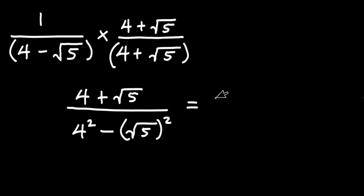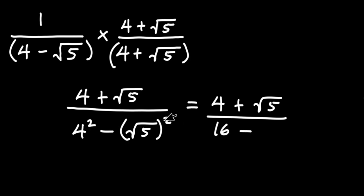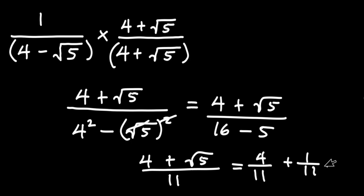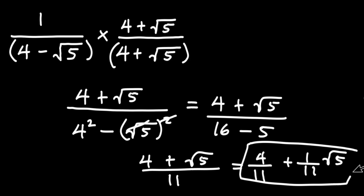On the numerator side we're going to have 4 plus square root of 5. Now 4 squared is 16, then minus the square of square root of 5, the square root goes away and we are left with just 5. So we get 4 plus square root of 5 all divided by 11. We can split this fraction to get 4 over 11 plus 1 over 11 times square root of 5, and this is the final answer.